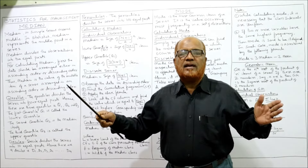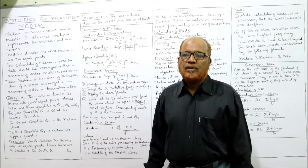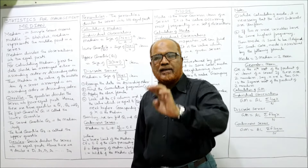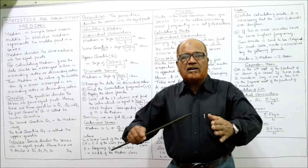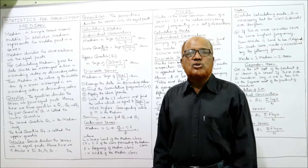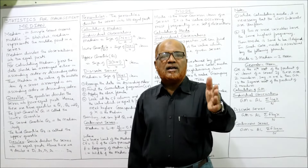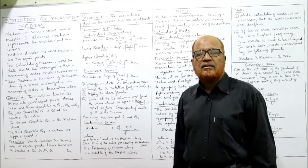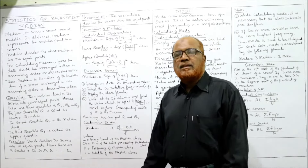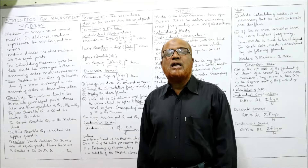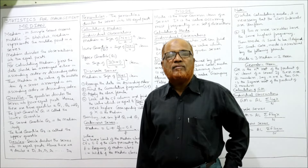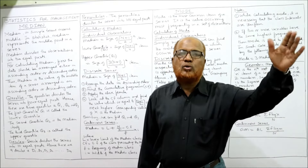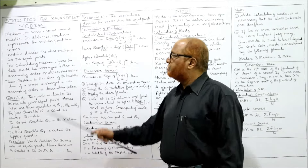Deciles divide the series into ten equal parts, so there are nine deciles: D1, D2, D3, D4, D5, D6, D7, D8, D9. Percentiles divide the series into 100 equal parts, giving us 99 percentiles: P1, P2, P3, P4, and so on up to P99.